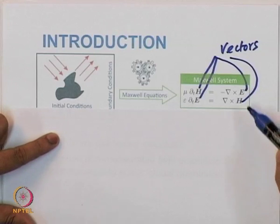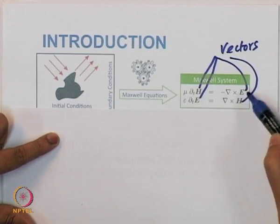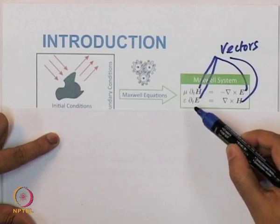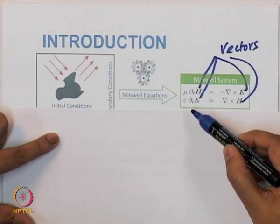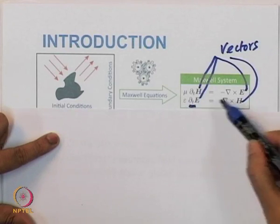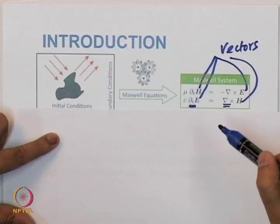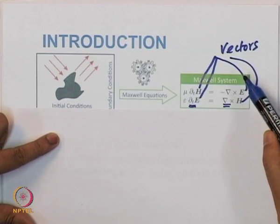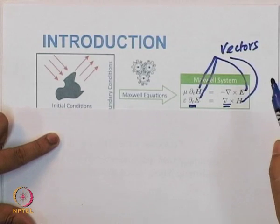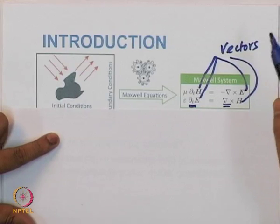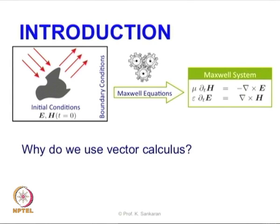Always we are going into vectors, and secondly we are using the vectorial calculus and partial differential equations to model the Maxwell equations. Fundamentally, the question is: what is the need for, or why do we always use vector calculus? In other words, what is the need for vector calculus?